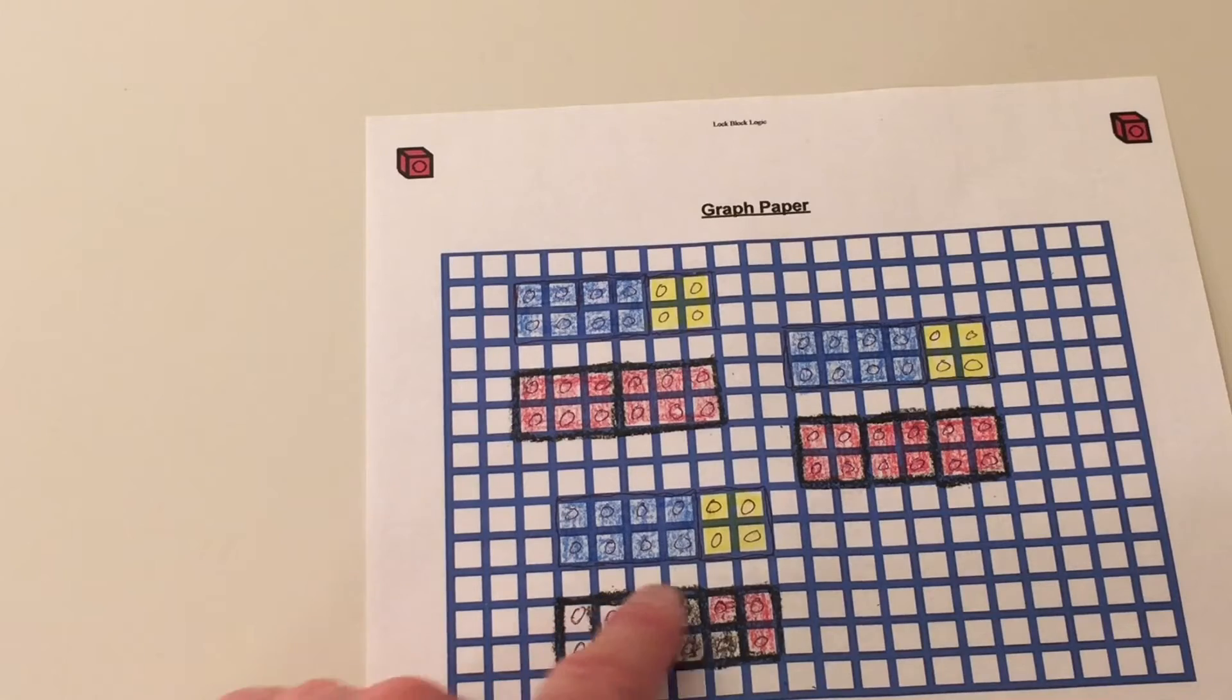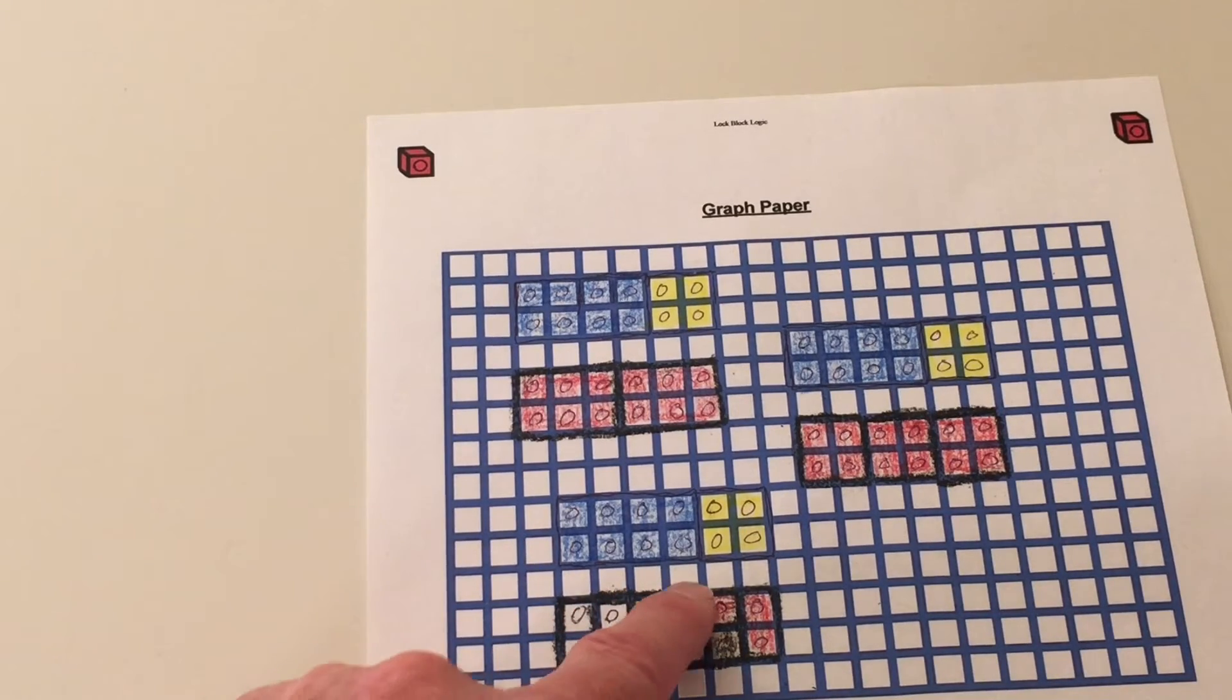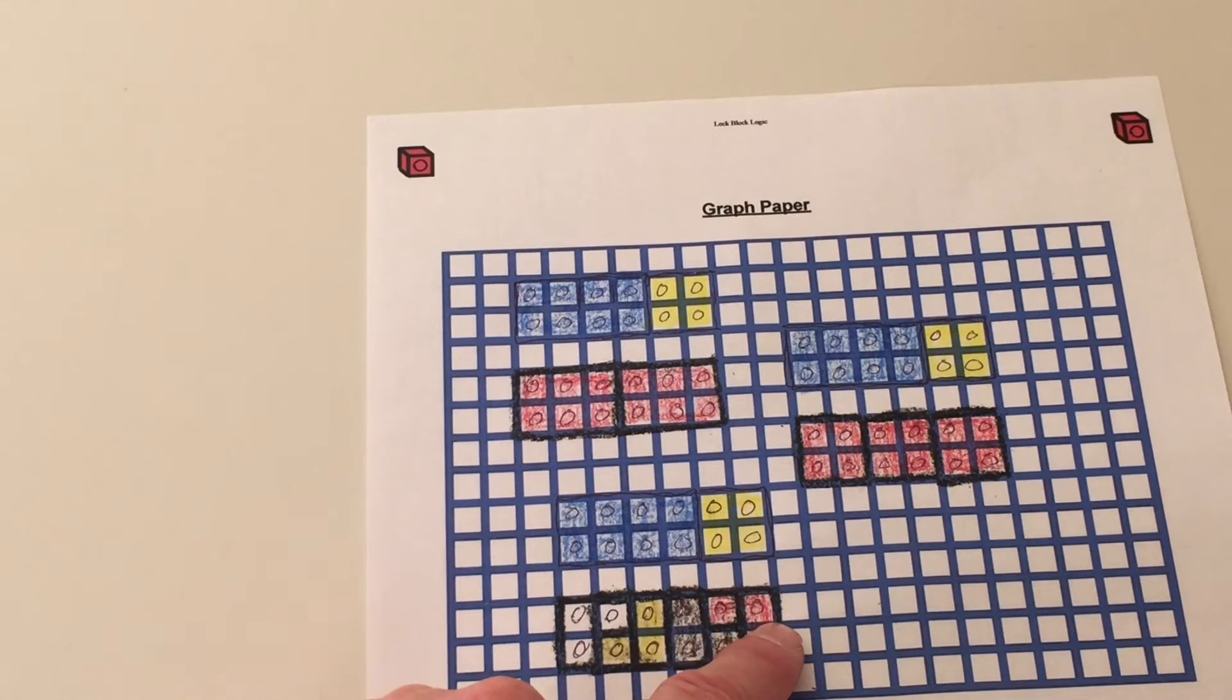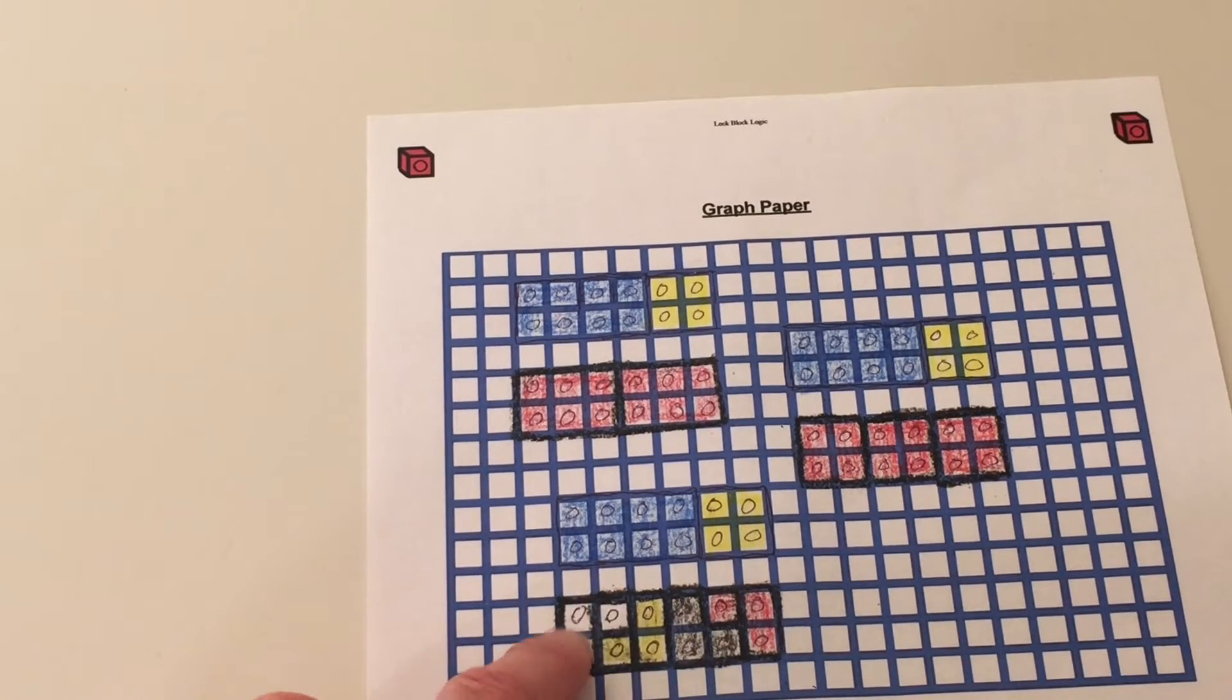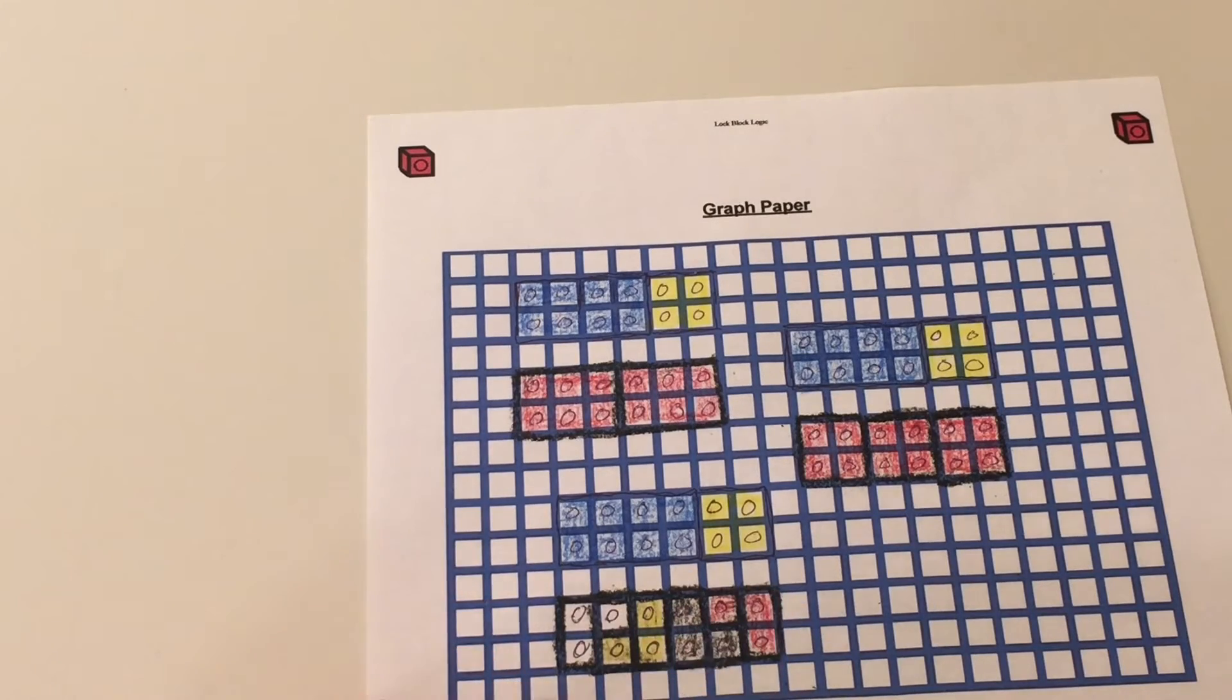And here I made our 3-dot blocks. 1, 2, 3, 1, 2, 3, 1, 2, 3. There are 1, 2, 3, 4 3-dot blocks that equal 12.